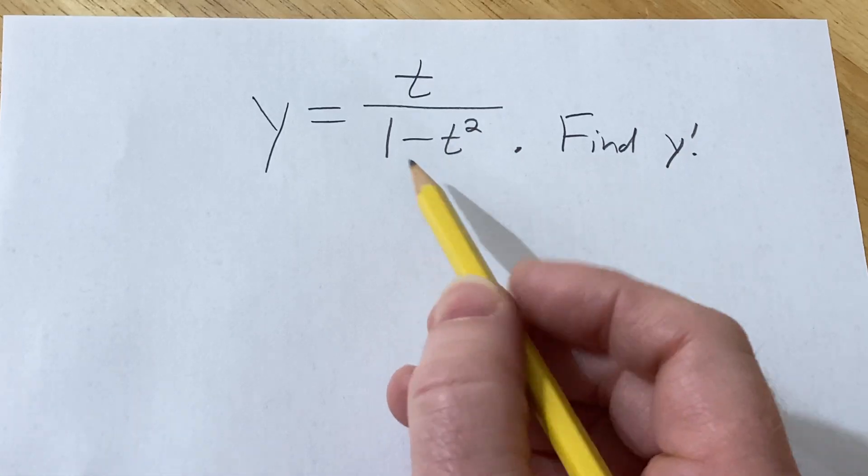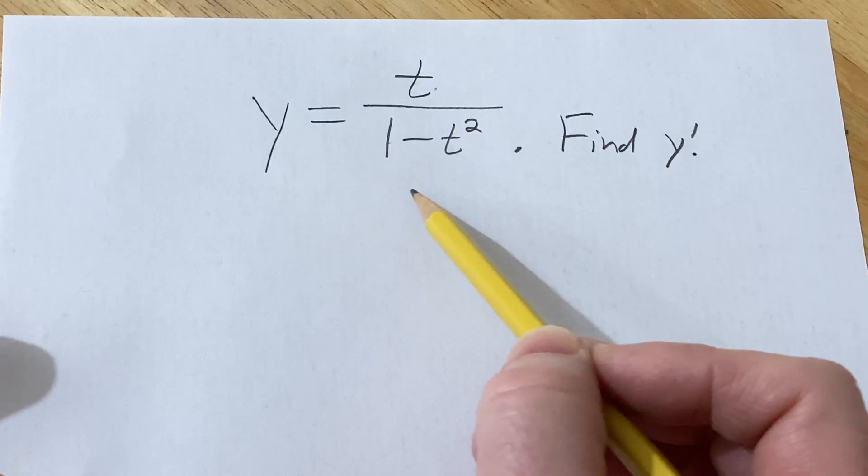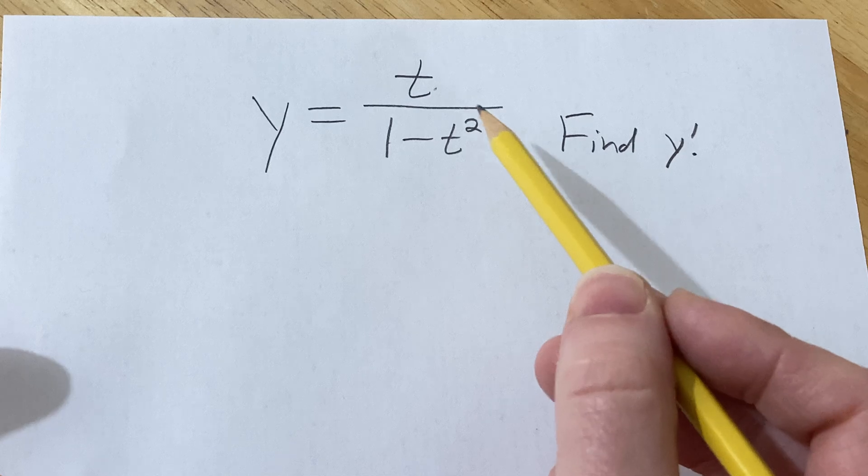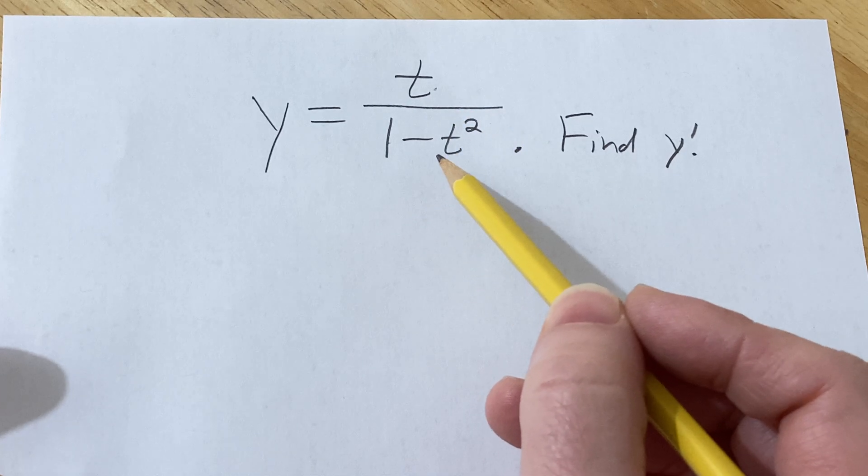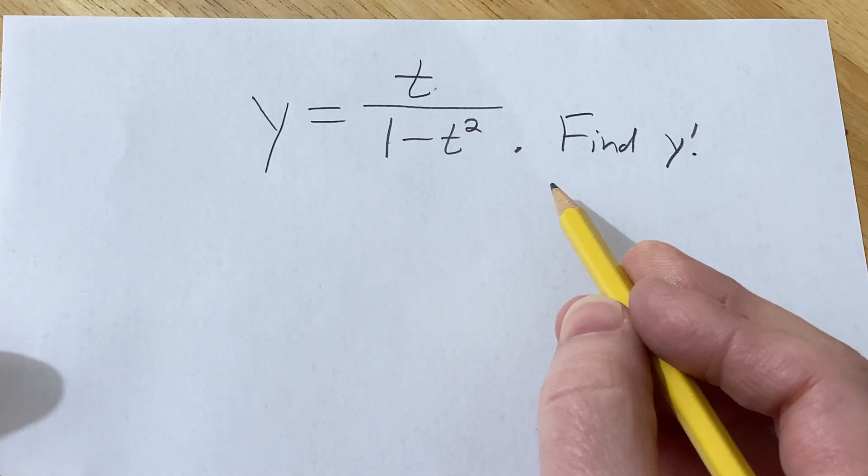Hello, in this video we're going to find the derivative of this function. We have y equals t over 1 minus t squared. So we have a fraction, in other words, we have a quotient. And so whenever you have a quotient, you should try perhaps the quotient rule, and in this case, that's going to be the best approach.